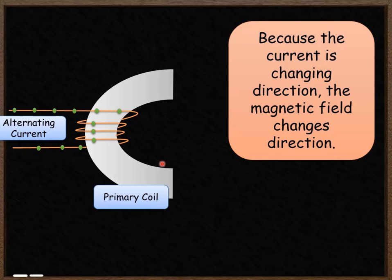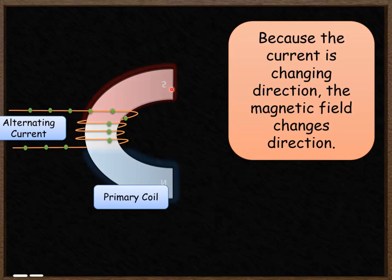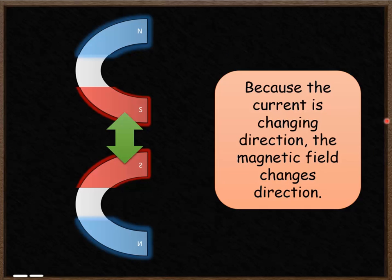Because the current is changing direction, the magnetic field will also be changing direction. Notice how the north poles and the south poles switch over as the current reverses in direction. Each time the current switches, so does the magnetic field — it might switch from one orientation to another, with the poles in different positions.